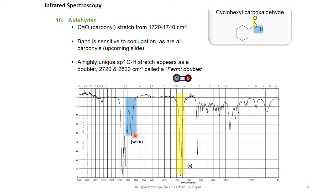In aldehydes, C=O carbonyl stretch from 1750 to 1720. Band is sensitive to conjugation as are carbonyls. A slightly unique sp² C-H stretch appears as a doublet called Fermi doublet as shown here.